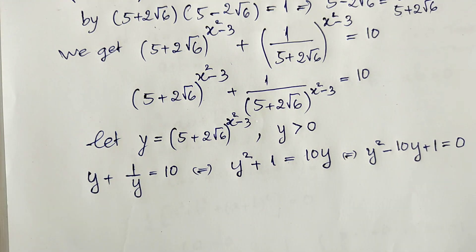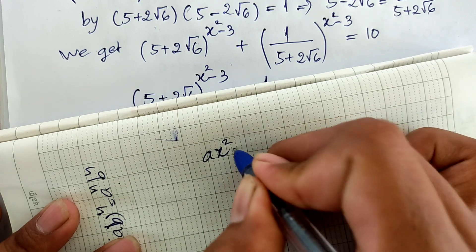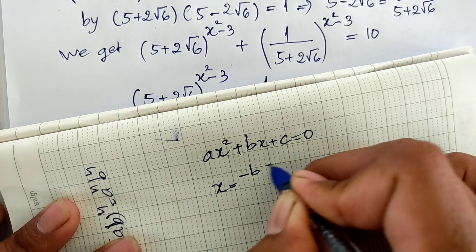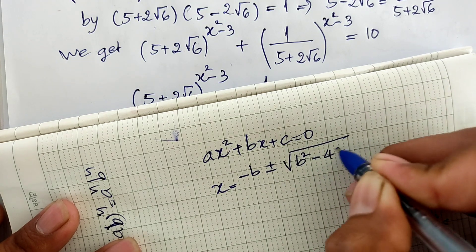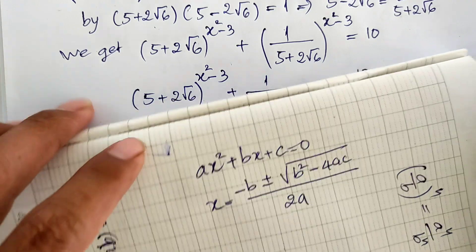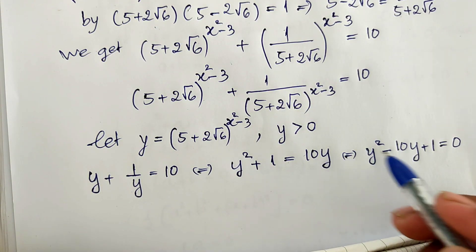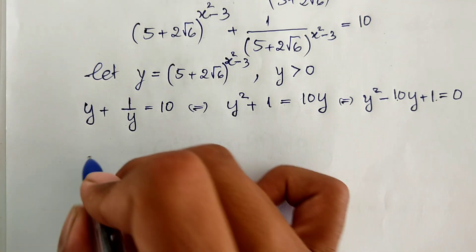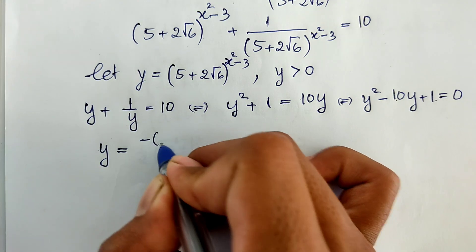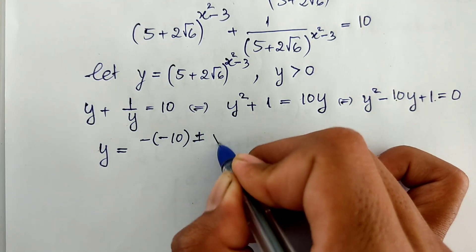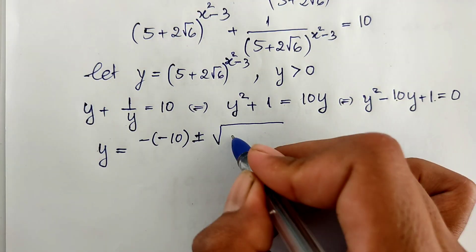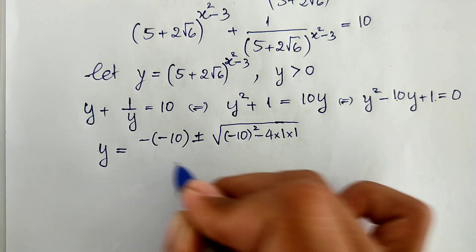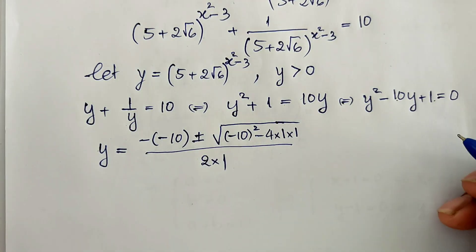We use the quadratic formula: for ax² + bx + c = 0, x = (-b ± √(b² - 4ac)) / 2a. Here a = 1, b = -10, c = 1. So y = (10 ± √(100 - 4)) / 2.